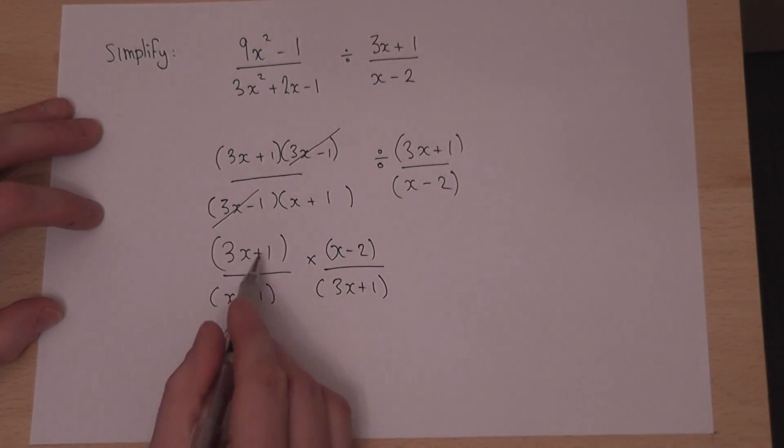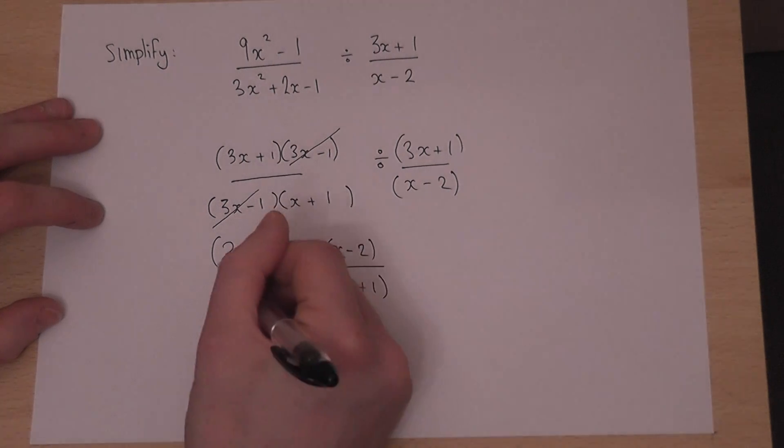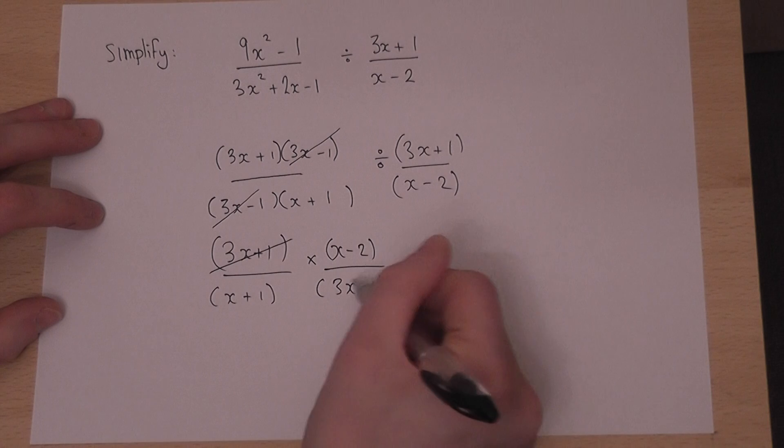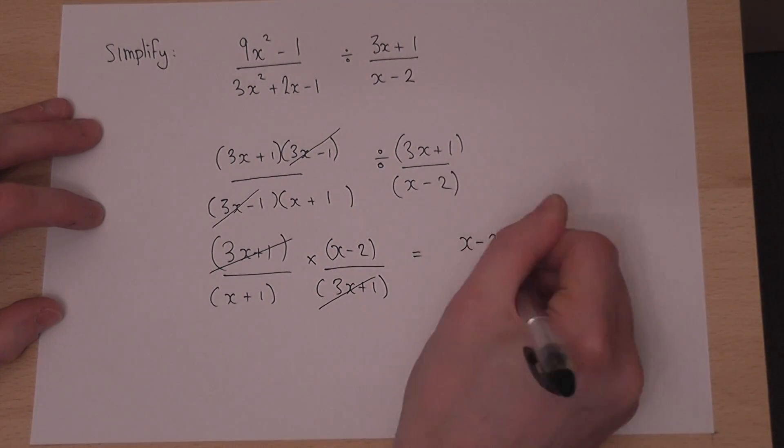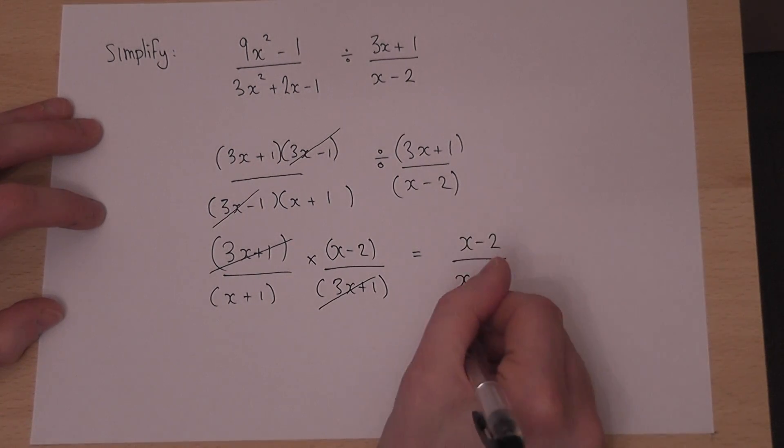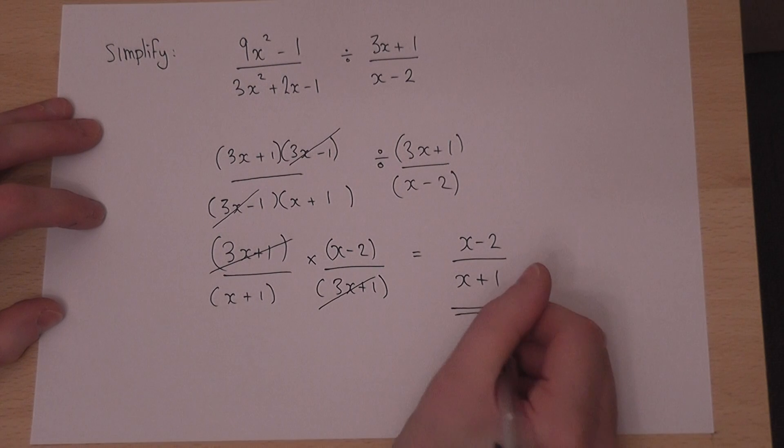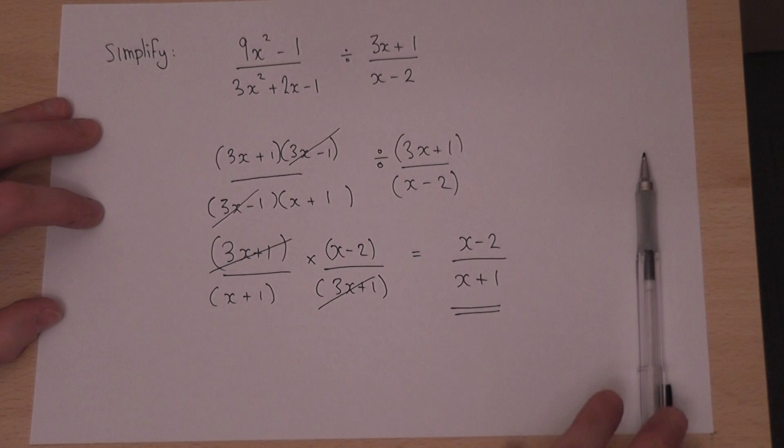And then we observe how these two parts here, above and below, are the same. So therefore, they also cancel. So in the end, I'm left with an x minus 2 on the top, all over an x plus 1 on the bottom. And the brackets are no longer required because there are two separate terms, one above and one below.